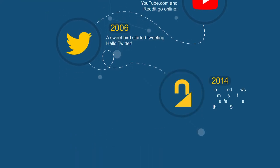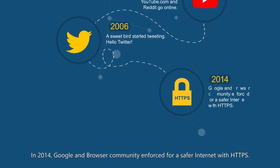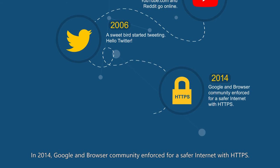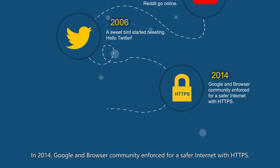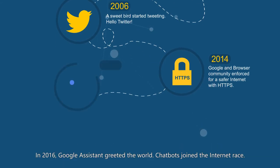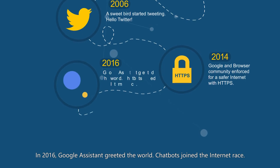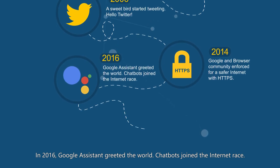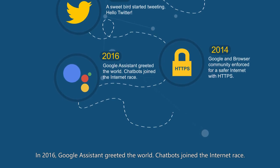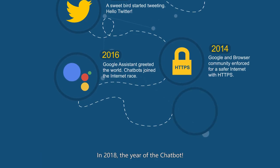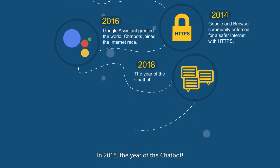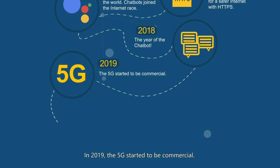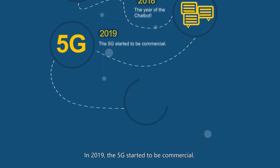In 2005, YouTube and Reddit went online. In 2006, Twitter launched — a sweet bird started tweeting hello. In 2014, Google and the browser community enforced HTTPS for a safer internet. In 2016, Google Assistant greeted the world.